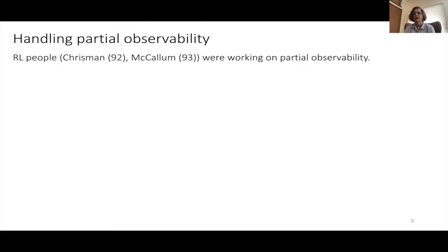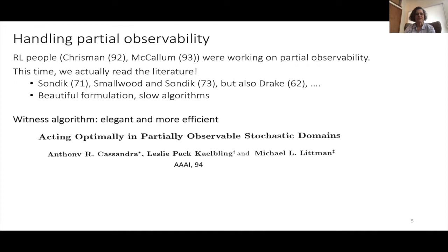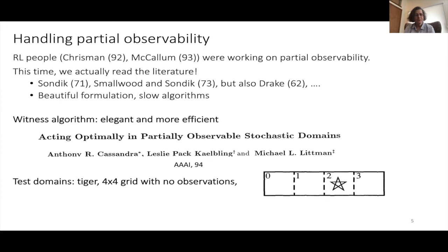There were other people, Lonnie Chrisman and Andrew McCallum, working on partial observability in their thesis work. We went back and read the literature and found work by Sondik and Smallwood in particular. There was really much earlier work by Drake with a beautiful formulation for partially observed Markov decision processes. I had two great PhD students, Michael Lippman and Tony Cassandra. Michael developed the theory, and Tony did important implementation.